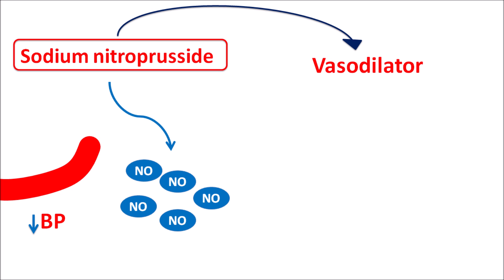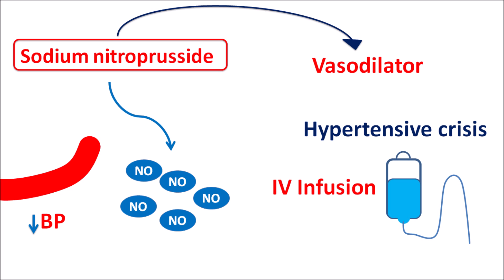Sodium nitroprusside produces vasodilatation of both arterioles as well as venules — it is both an arteriolar and venular vasodilator. However, it is not used as a conventional antihypertensive. This drug is restricted for emergency conditions, particularly indicated in hypertensive crisis where an excessive increase in blood pressure needs to be rapidly reduced. Because it is used under emergency conditions, it is given by IV infusion.